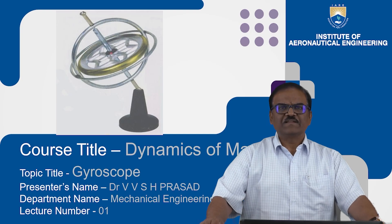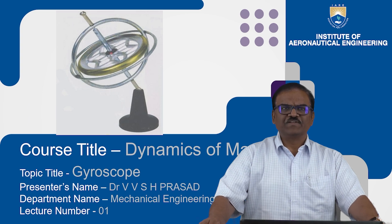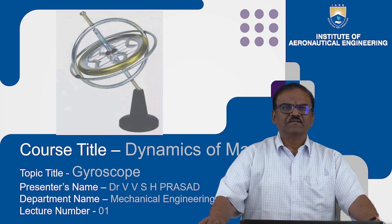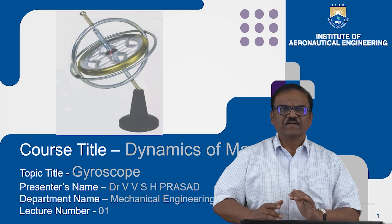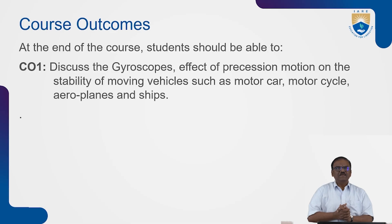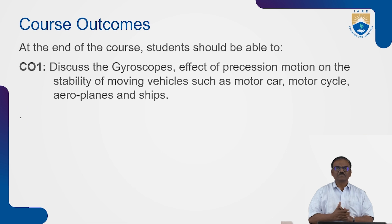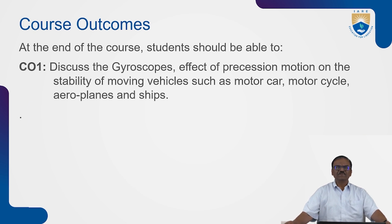Hi, this is Professor VVS Harnatrasa. Today my course title is Dynamics of Machinery and the course topic is Gyroscope. At the end of the course, students should be able to understand and discuss the gyroscope and the effect of precession motion on the stability of moving vehicles such as motor car, motorcycle, aeroplane, and ships.